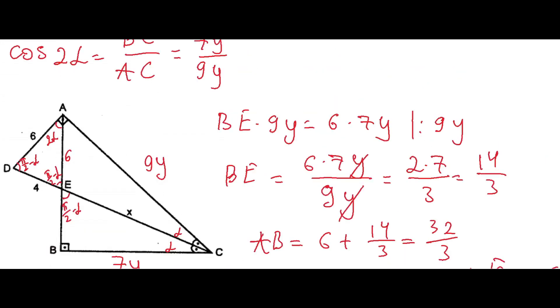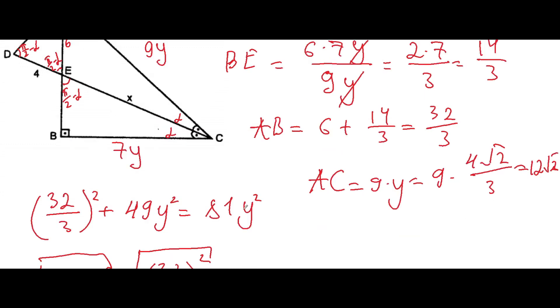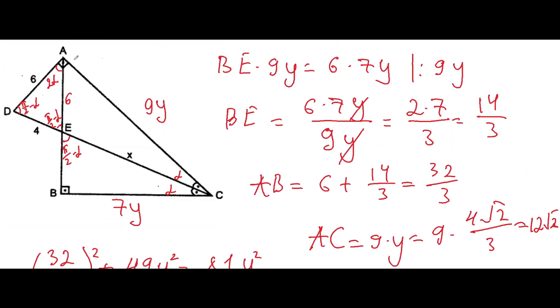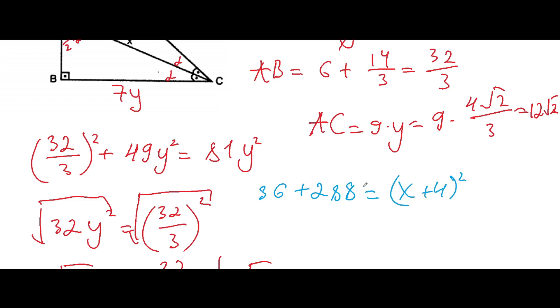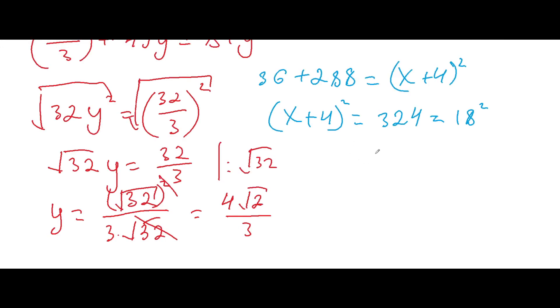And from the triangle DAC, we can find out x. I'll write down shortly the Pythagorean theorem. So it will be 6 squared. Let me write down here. 6 squared plus here 9y squared, AC squared. It will be 288. Here let me write 36 plus 288 will be equal to here x plus 4 squared. x plus 4 squared.